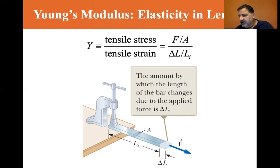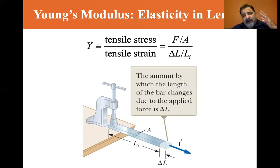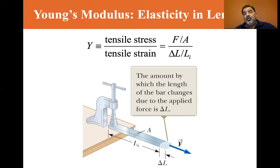As an example, atmospheric pressure is 101.3 kilopascals, or 101,325 Pascals — that's the number of Newtons per square meter of air sitting on a square meter.